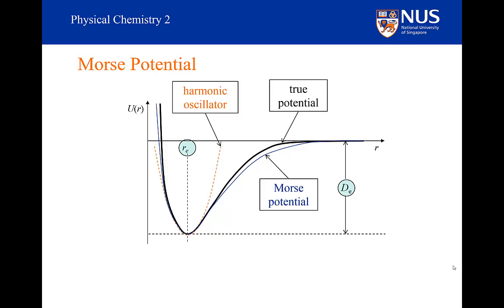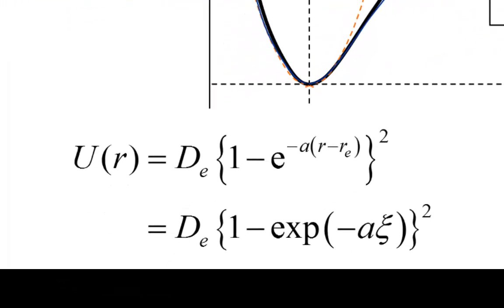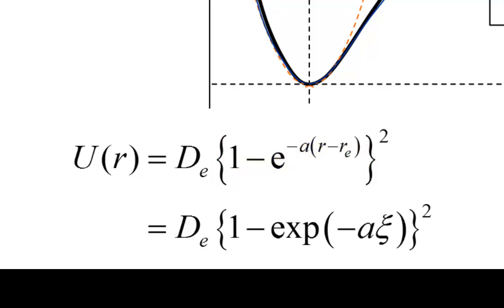So what does the Morse potential look like? We've introduced an exponential term into our expression. Let's check if it makes sense. At the equilibrium position, R is equal to R sub E, so R minus R sub E is equal to zero. The exponential term will therefore be equal to one, the term in brackets will be equal to zero, and so the potential is zero — and indeed it is a minimum.